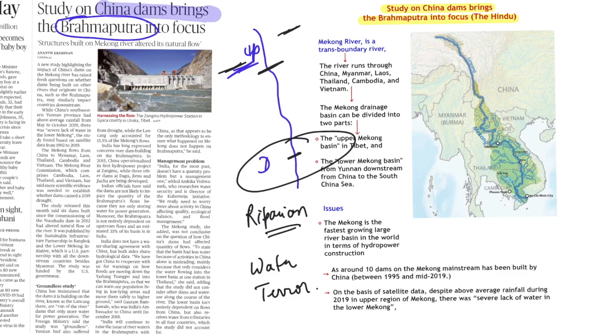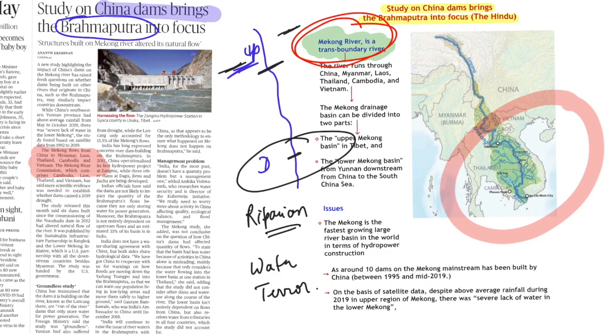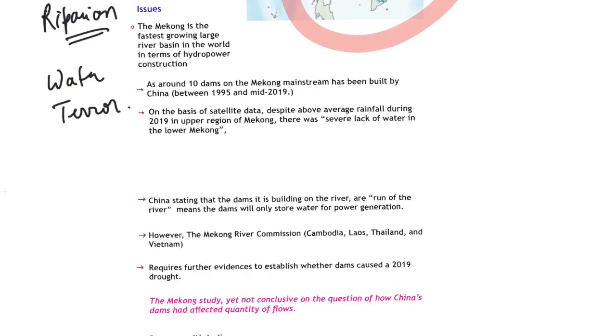Now, recently what happened? Mekong River has been into the question because the lower states such as Myanmar, Laos, Thailand, Cambodia, Vietnam, all this particular region, they have facing a water shortage. And the reason for water shortage is the dams that have been built by China onto the Mekong River. Now, if we talk about the dams, then around 10 dams have been made onto the Mekong mainstream by the China between 1995 to 2019. And it has been said that despite of above than average rainfall into the upper region of Mekong, the lower countries are facing the shortfall into the water. Why? Because water is being diverted by the China.